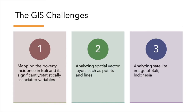In this study, the percentage of poor people in Bali and its significantly associated variables as the result of regression slope tests are mapped by using GIS. Secondly, spatial layers such as points and lines that can be overlaid on top of the percentage of poor people thematic map are also analyzed. And lastly, the satellite image of Bali province is also analyzed in regards with poverty incidence.